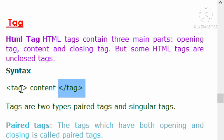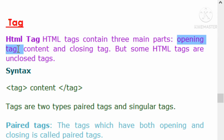A tag is called when it follows the same rules. We have 3 parts. The first part is the opening tag. If we place a tag, the first part is the opening tag. For example, if you want to select text, we use the opening tag.